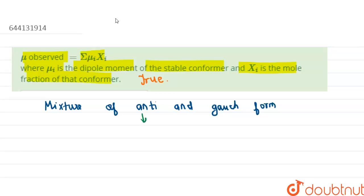The dipole moment of the anti conformer is μₐ and its mole fraction is xₐ. The dipole moment of the gauche form is μ_g and its mole fraction is x_g.